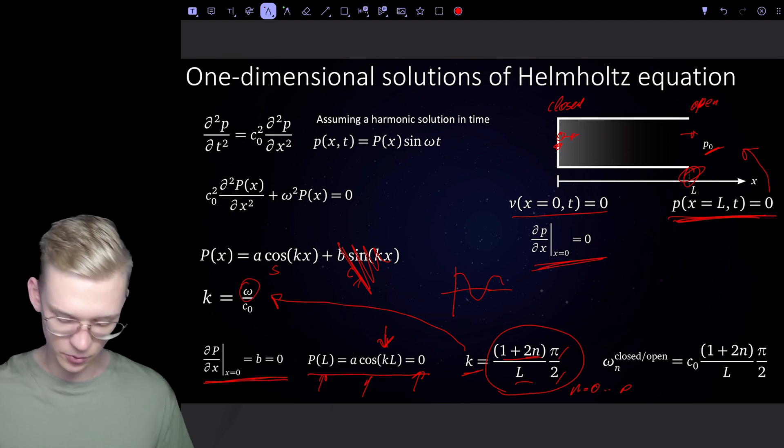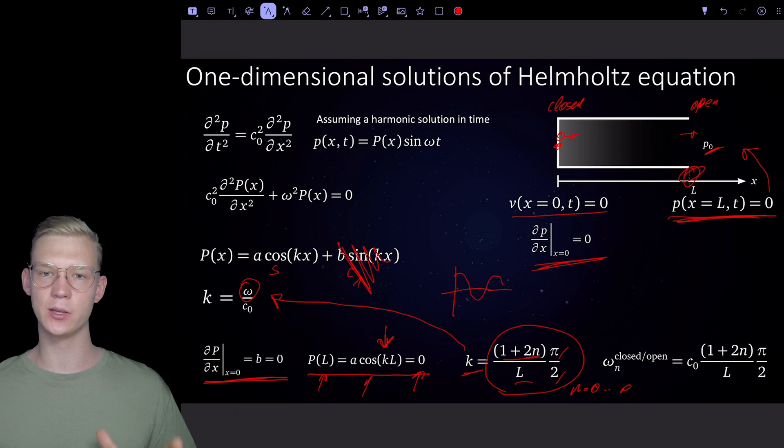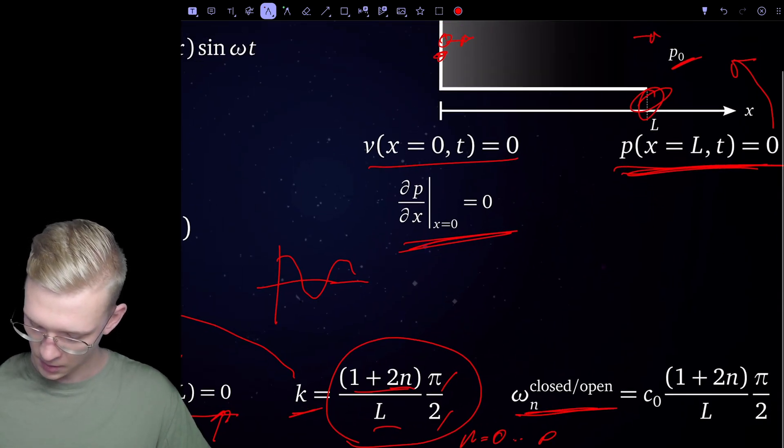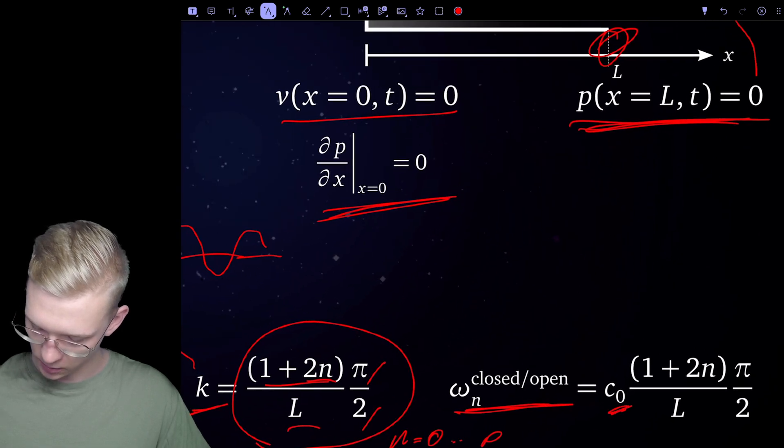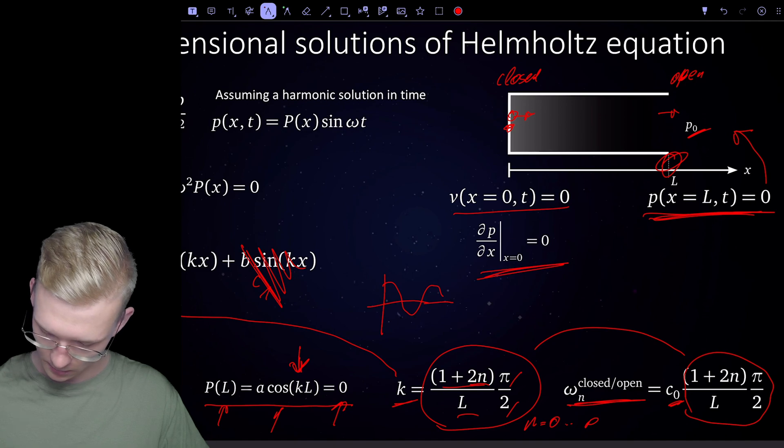We can say that if k is that, we can insert our k here, reformulate our term to get omega, and then we found the eigenfrequency of that system with a closed and open end. So we have closed-open is equal to the speed of sound times this k that we found before.